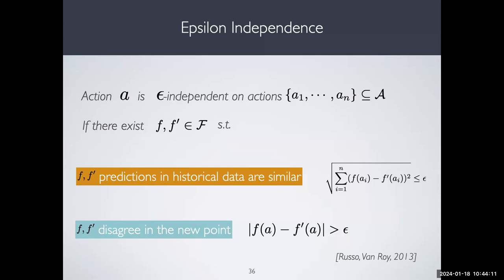Let me define epsilon-independence, which gives rise to the eluder dimension. An action is epsilon-independent of previous actions if there are two functions F, F' such that the square difference — the distance in the historical data — is small, but the value of these two functions at the new action is large. That's an action epsilon-independent of a historical sequence, and this is related to our use of square loss in the noisy case.